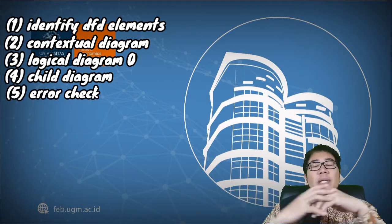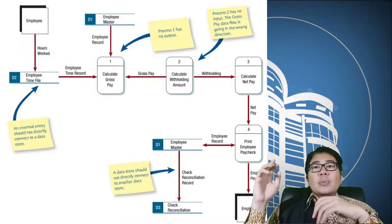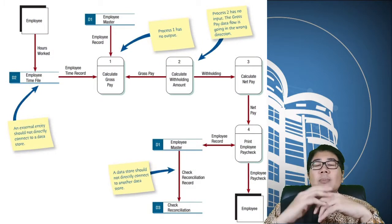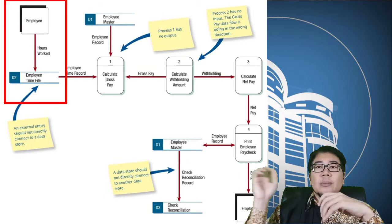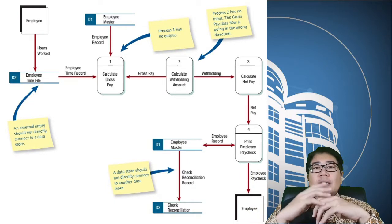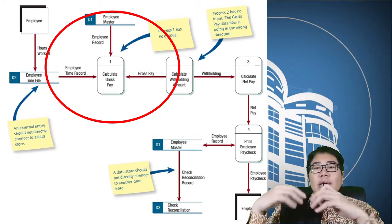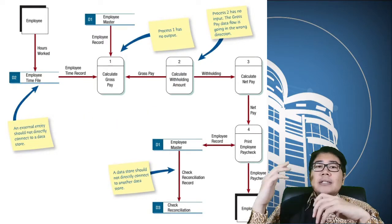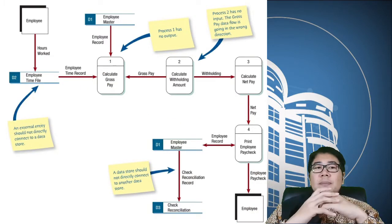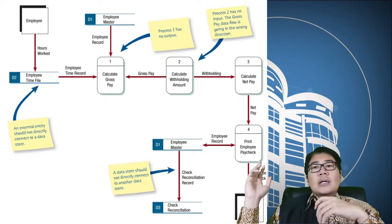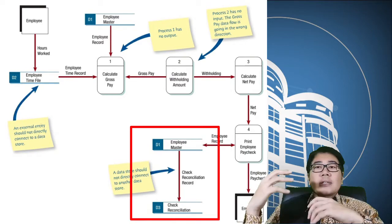You can see the common errors in the following figures. Some of them are: first, data flow from an entity directly to a data store; second, a process without an output; third, a process without an input; and last, data flow from a data source to another data source, or from an entity to another entity. Those are some of the common mistakes when drawing a data flow diagram.